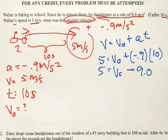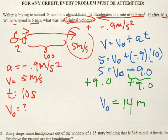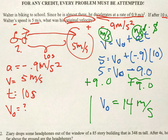So let's write our variables. Acceleration is negative 0.9 meters per second squared. Our final velocity is 5 meters per second. Our time is 10 seconds. The question asks what's the original velocity, our initial. We should be using our third equation where final velocity equals initial velocity plus acceleration times time.